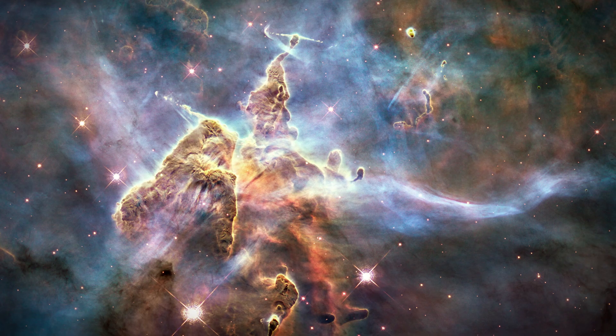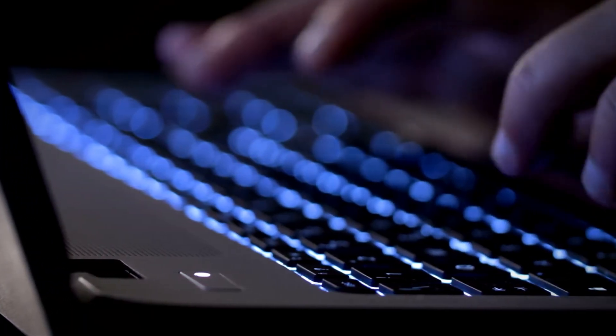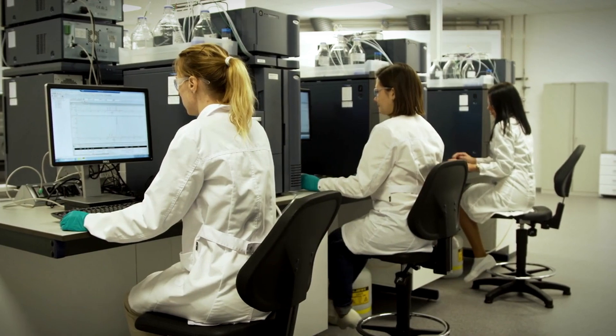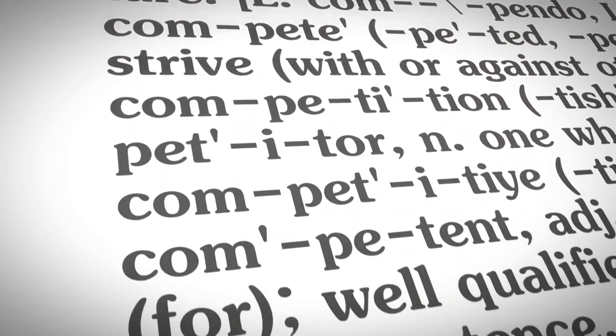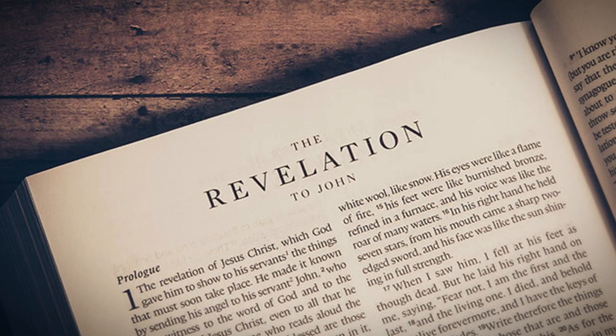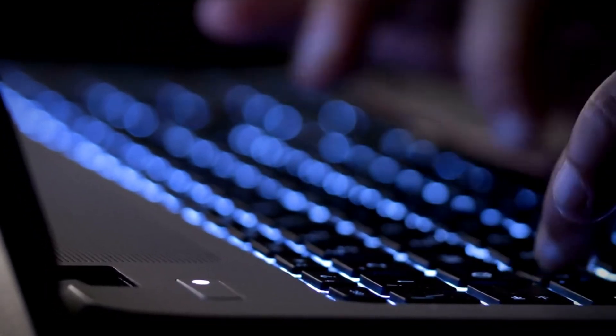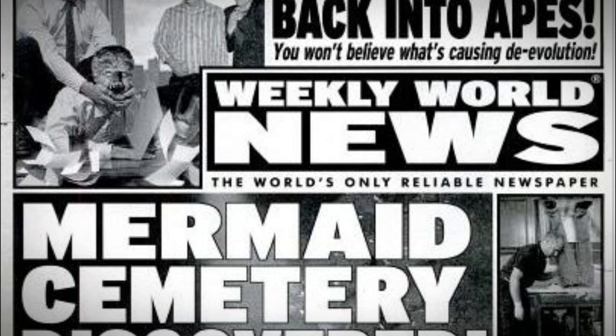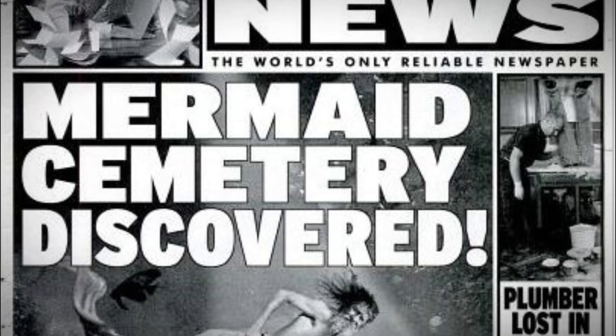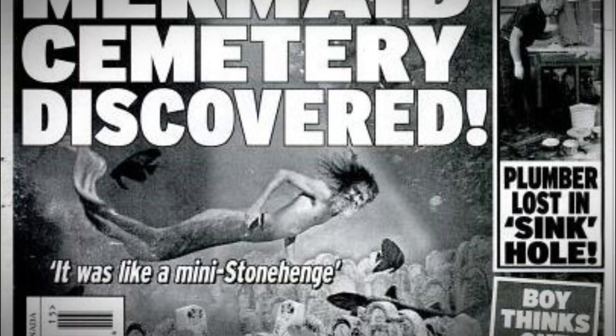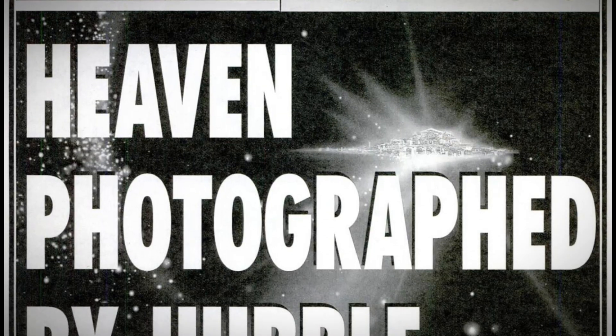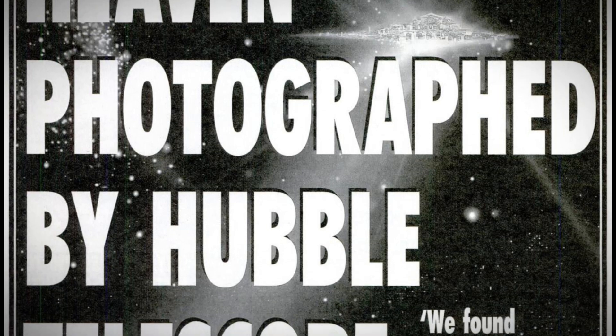However, some people took his artwork and used it to spread a religious hoax online. They claimed that the image was a real photograph of the gates of heaven, and that scientists were baffled by the discovery. They also attached a narrative that linked the image to the Book of Revelation and the end times. This hoax was not original, but a recycled version of an older hoax that used a different image and a different story. The older hoax was published by a tabloid magazine called Weekly World News in 1994, which was known for making up sensational stories for entertainment. The magazine printed a fake image of heaven and claimed that it was taken by the Hubble Space Telescope. The magazine even admitted that the image was a work of art in a small disclaimer.